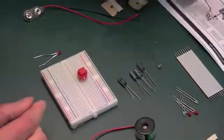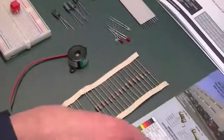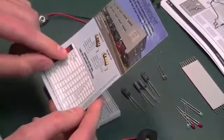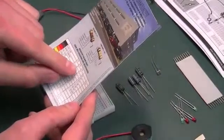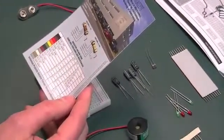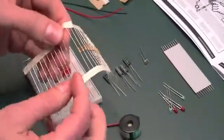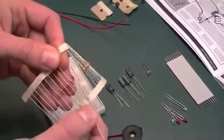We also need a 1K resistor. So let's have a look at our chart. A 1K resistor is going to be brown, black and red. These are the supplied resistors, and here we have a 1K resistor.